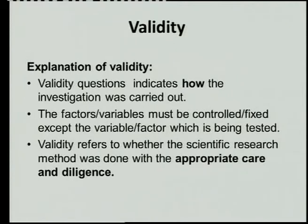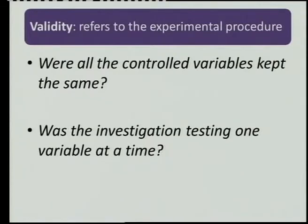How did I control those variables — or factors? So it's those research methods that you've done, and were they done with the appropriate care and diligence? It's all about variables with validity — the constant or fixed variables. We are testing one variable at a time. For example, when I want to test if sugar dissolves faster in cold water or hot water, the only thing I change is the temperature of the water, and I take the time to see how fast it dissolves. The size of the container, the amount of sugar, the amount of water, the place where I do it, the way I stir — those must be kept constant. Those are the fixed variables, and if I do it right, then my experiment is valid.